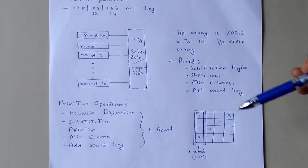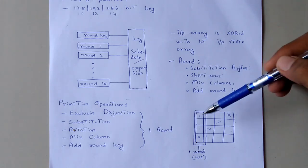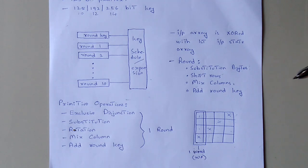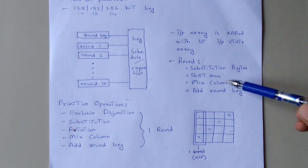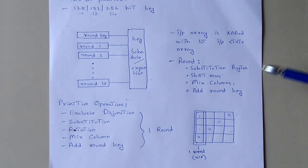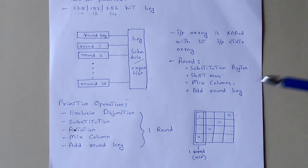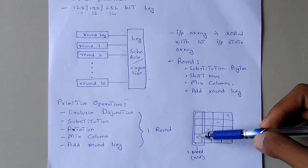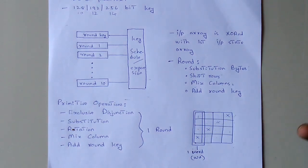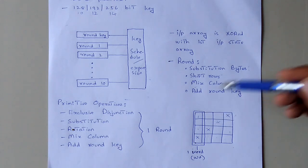Note that during decryption, instead of left-shift we use right-shift. Next is MixColumns. In MixColumns, we multiply each column by a particular fixed matrix value, replace the result, and produce a completely different matrix by interchanging each column.